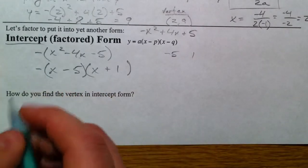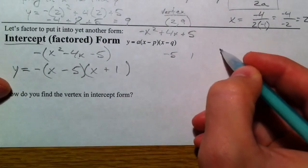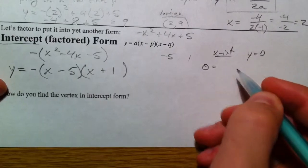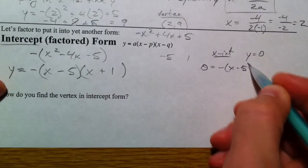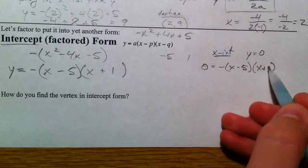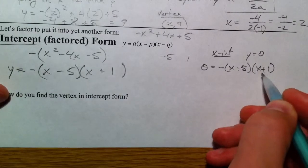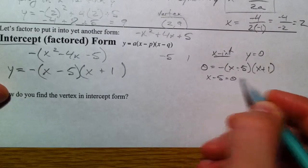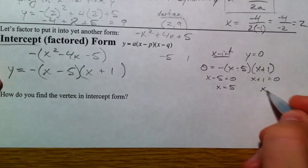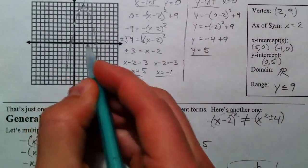And so what that gives you is this. This is great for x-intercepts because if y equals 0, 0 equals negative x minus 5 times x plus 1. Now, a negative number times something times some other number equals 0. So we know that either this number has to equal 0, or this number has to equal 0. And so that's how we can find the x-intercepts. x equals 5, x equals negative 1. And that's what we got before, where it crossed at negative 1 and it crossed at 5.